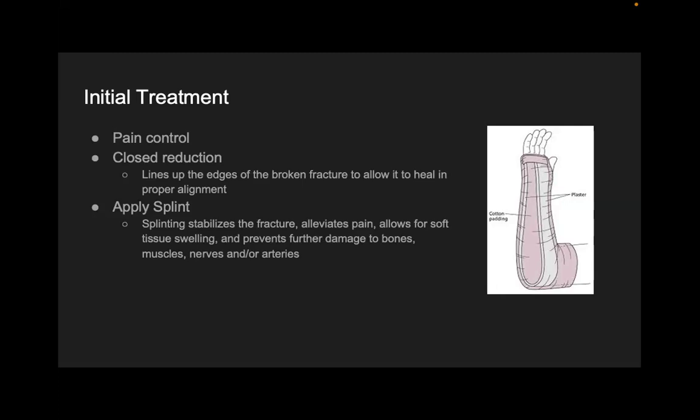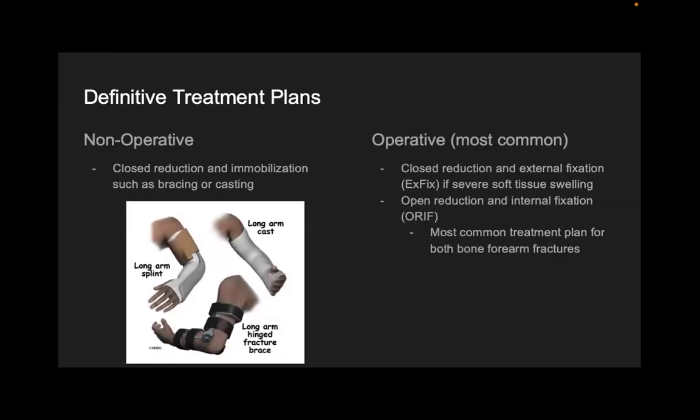For pediatric patients in casts, we bivalve — you cut one line along one side and another on the other side and spread it slightly, then wrap it again to give room for swelling. Fractures will swell before they get better, so you want to accommodate that.